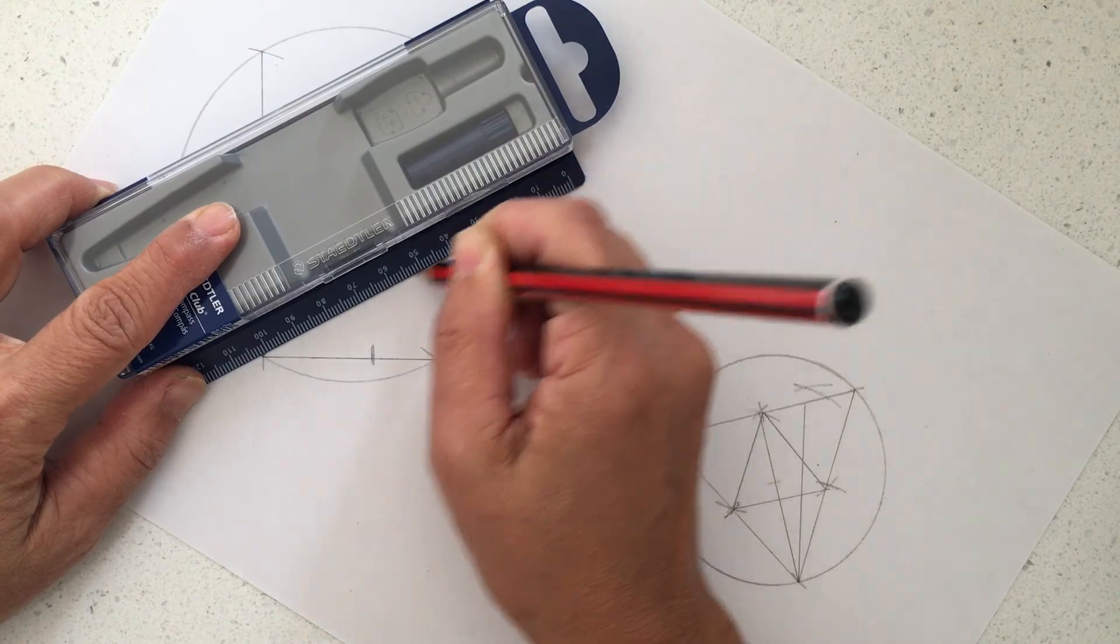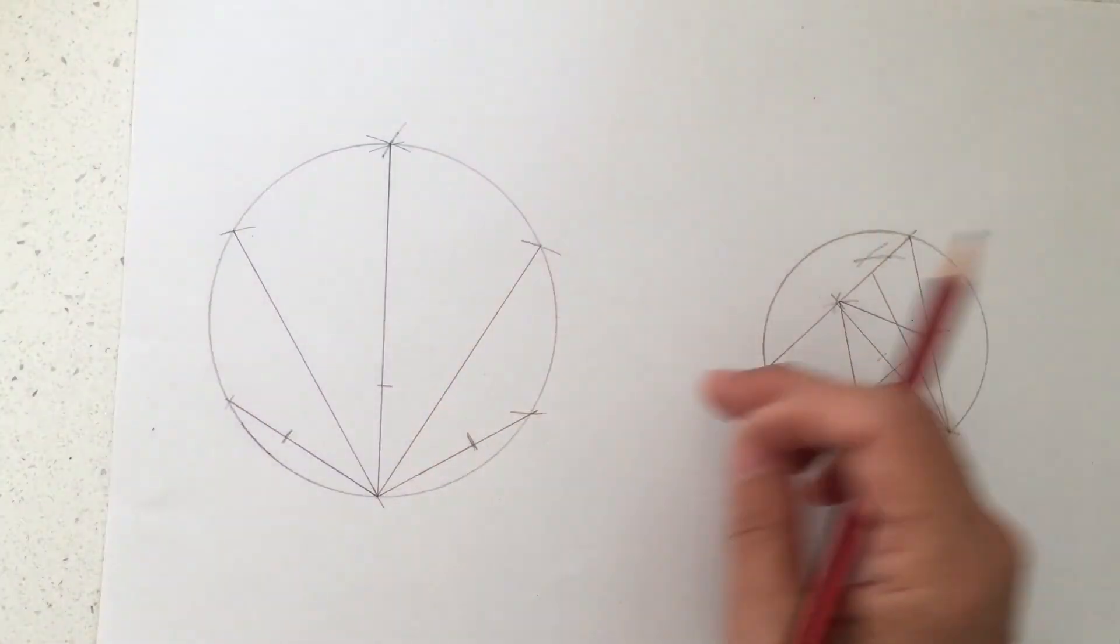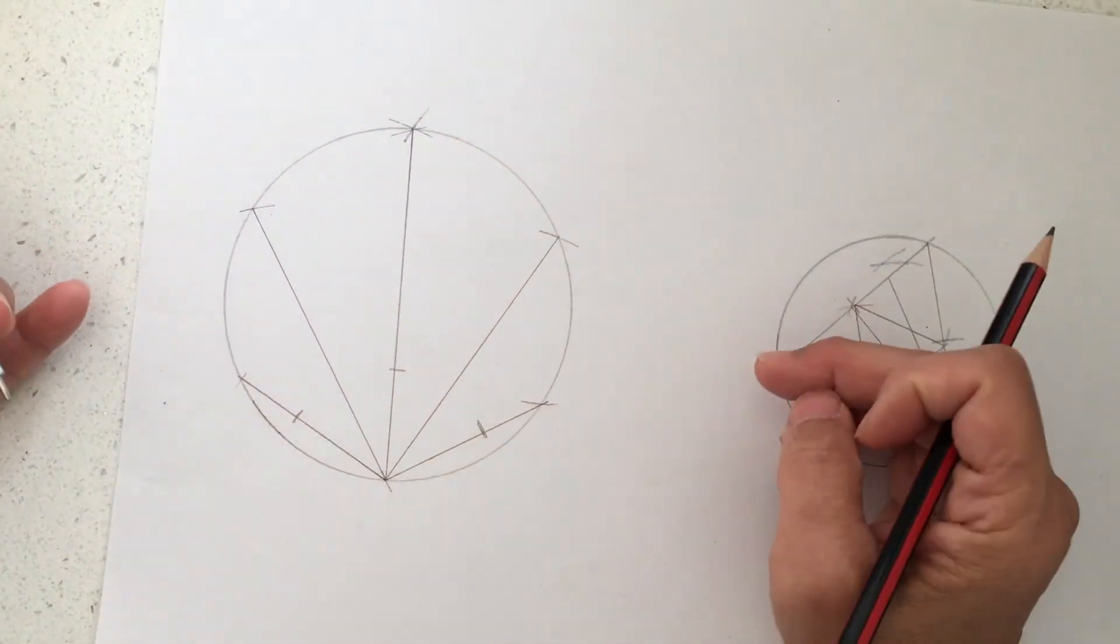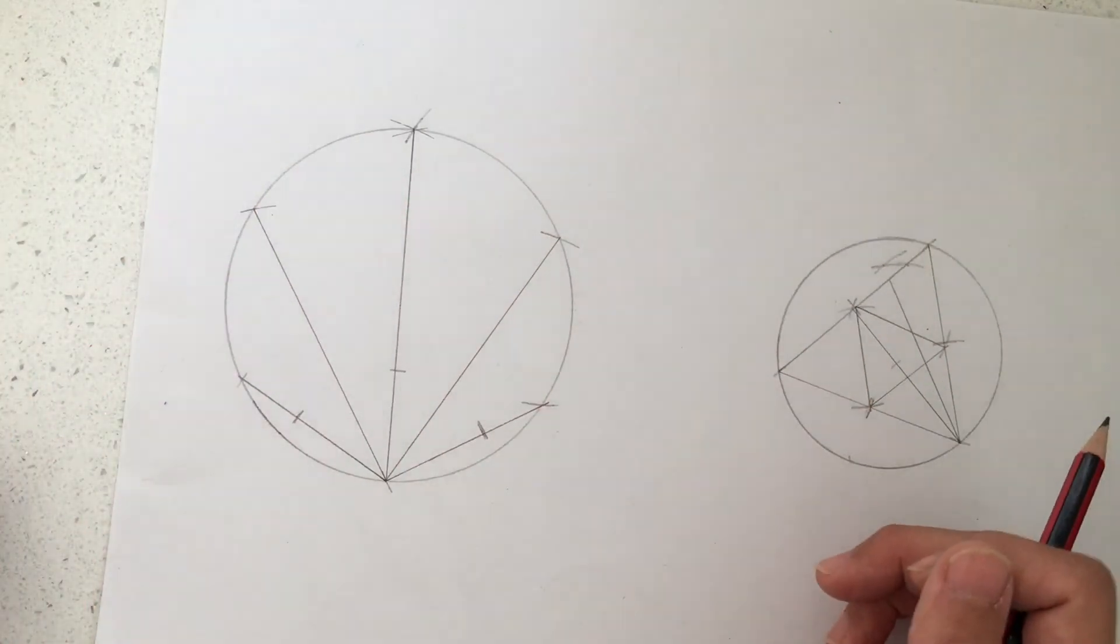I've just bisect the angle again. And you can just keep going. And it creates a different pattern within a circle.